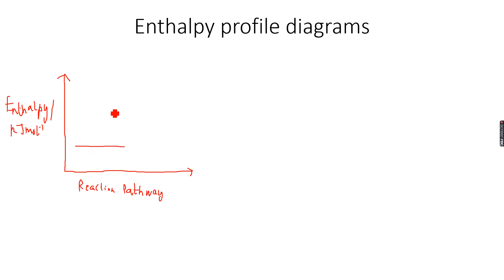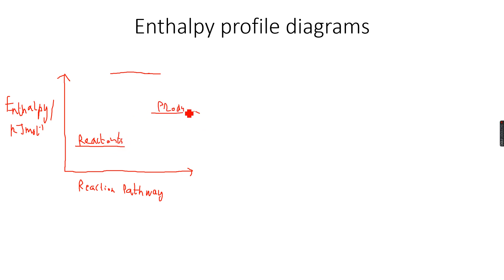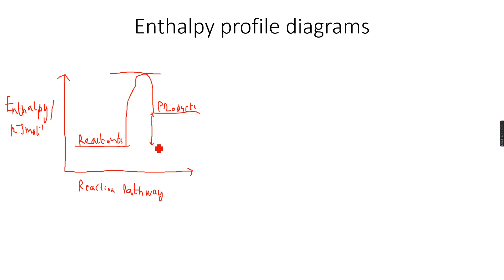We have the reactants, then an intermediate stage — you don't have to label this intermediate stage — and then we have the products. The cycle goes like this: the reactants go to this activated or intermediate state and then they go to the products.